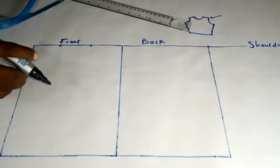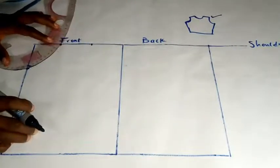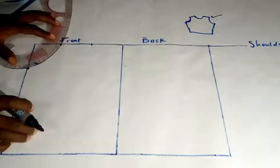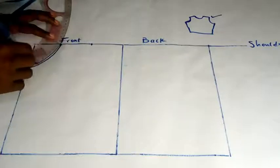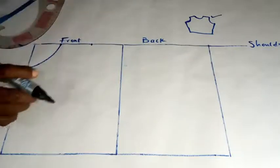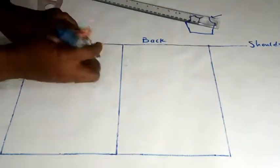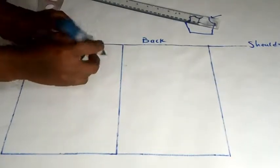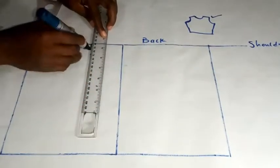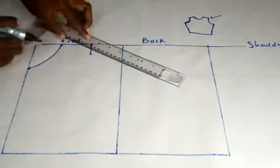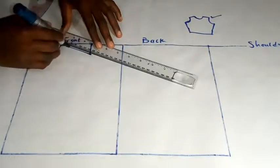After drawing my neckline, I will slant the front shoulder by 1 inch. So I'll just connect this line like this, then I will slant my shoulder this way.